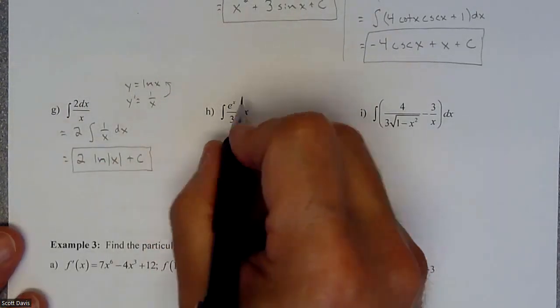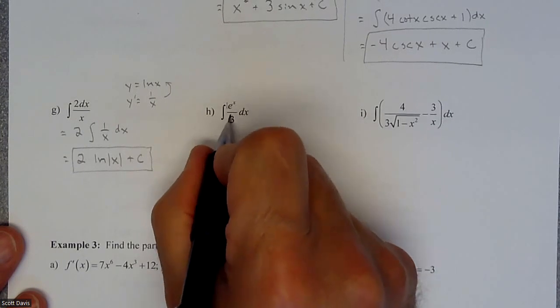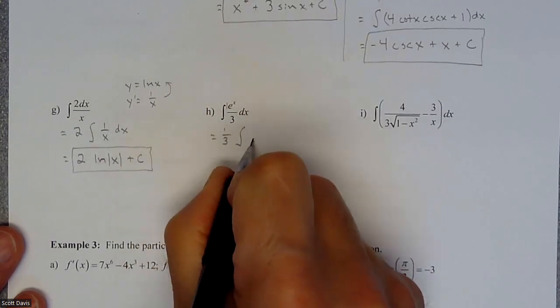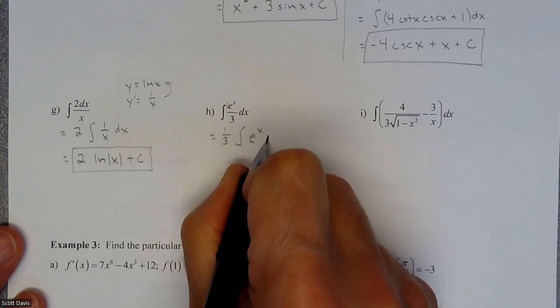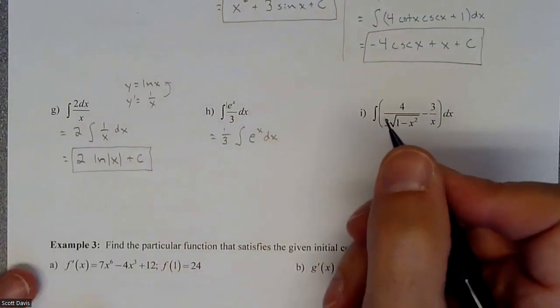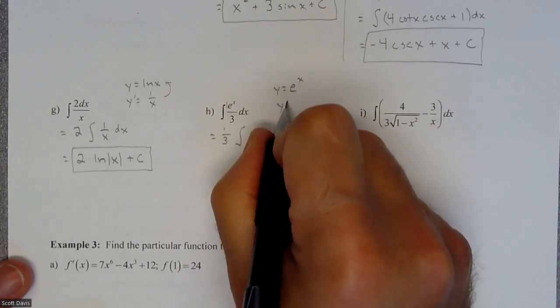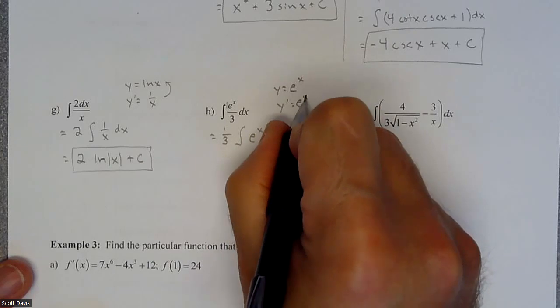So if we do the antiderivative of this, same kind of thing. I have a one-third that I can take out of this and just have an e to the x dx. And so if I remember that if I have a derivative of e to the x, it is just itself.